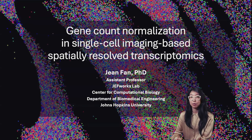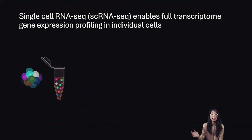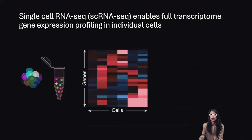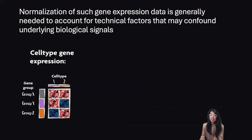Hello, I'm Professor Pan, and today I will be talking about gene count normalization in single-cell imaging-based spatially resolved transcriptomics. Advances in single-cell technologies have enabled scientists to take individual single cells and profile their transcriptomes — that is, measure what genes are being expressed — to facilitate the discovery and characterization of transcriptionally distinct groups of cells which may represent distinct cell types and cell states. Normalization of such gene expression data is generally needed to account for technical factors that may confound underlying biological signals.